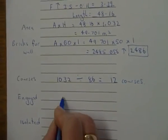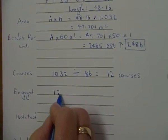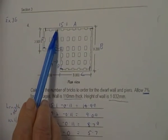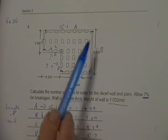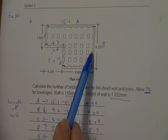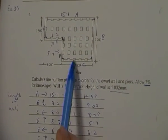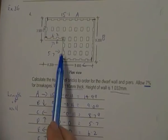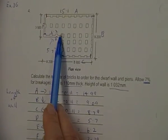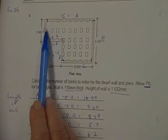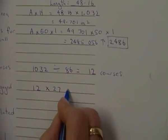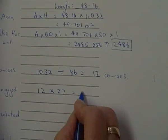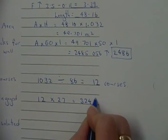So my engaged piers is number of courses 12 times the number of engaged piers, so all I do is count them up. 1, 2, 3, 4, 5, 6, 7, 8, 9, 10, 11, 12, 13, 14, 15, 16, 17, 18, 19, 20, 21, 22, 23, 24, 25, 26, 27. 12 times 27, and so we can use our calculator for that, and so it's going to be 324 bricks.